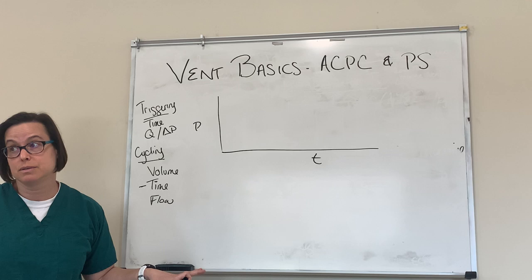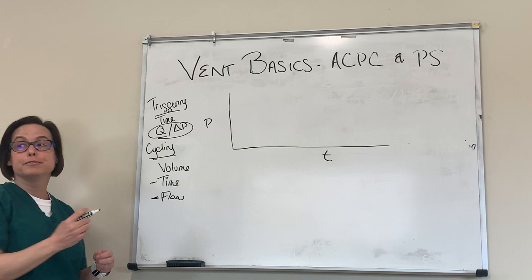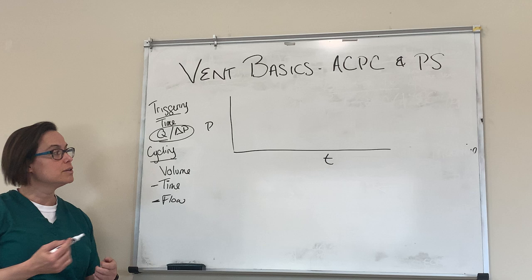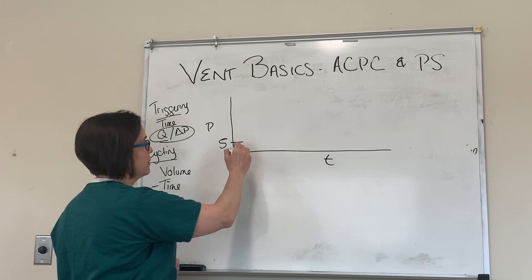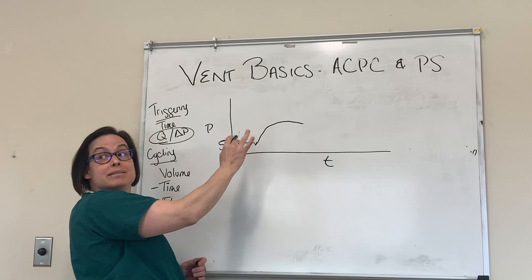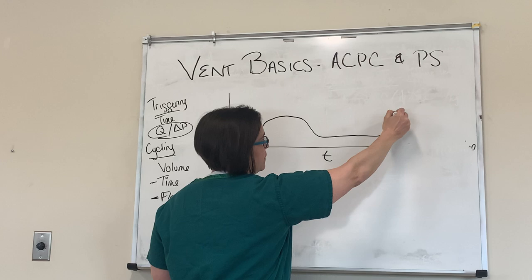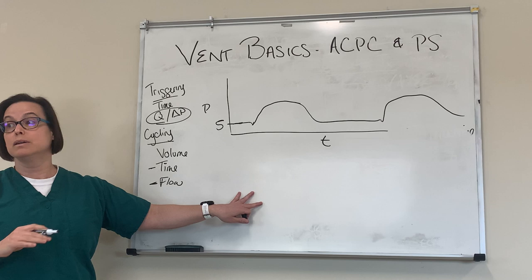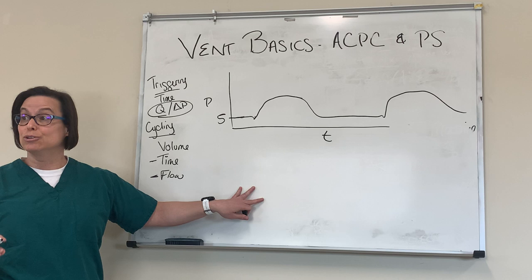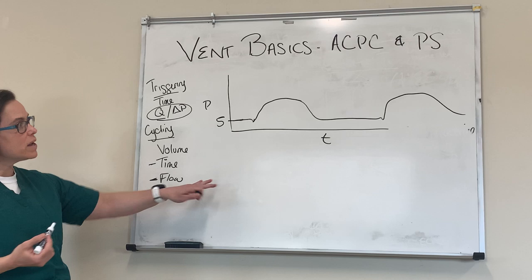In pressure support mode, we don't really set a rate except for a backup rate so people don't die — but we let the patient take all their own breaths. So we're only getting patient-triggered breaths. And how do we cycle — how does the breath shut off? It's the patient's flow rate that the machine picks up on. The breath looks more smooth as it goes through. The patient takes a breath, it pushes in air, and as the lungs fill up that flow slows until the machine shuts off and goes to exhalation. So it's flow cycled, which is more comfortable for patients, and it keeps them using their own diaphragm.